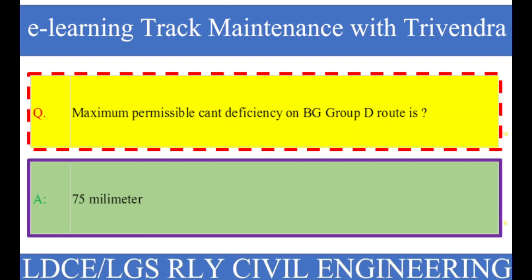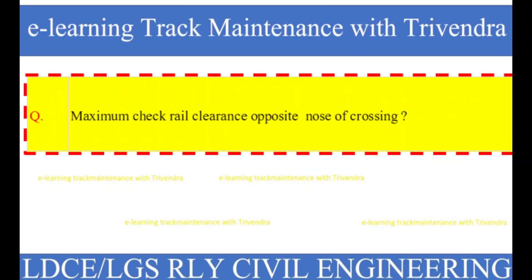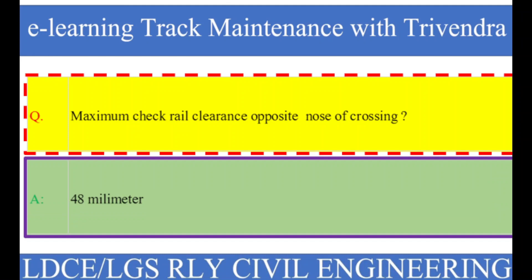Question number 74: Maximum check rail clearance opposite the nose of crossing? The right answer is 48 millimeters.